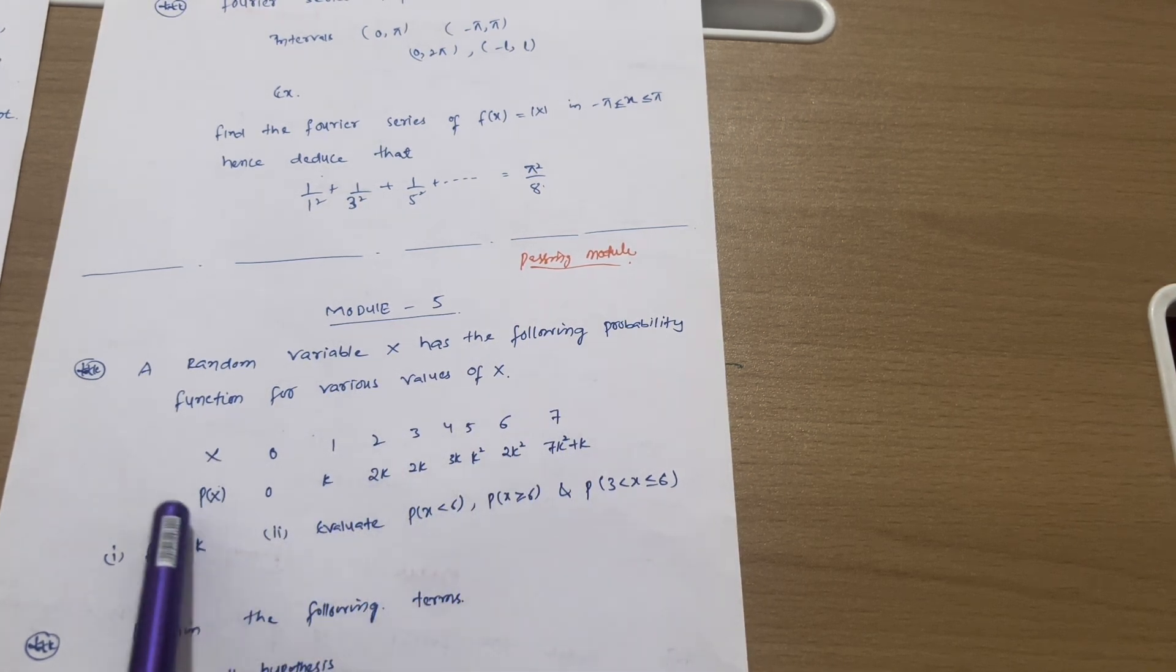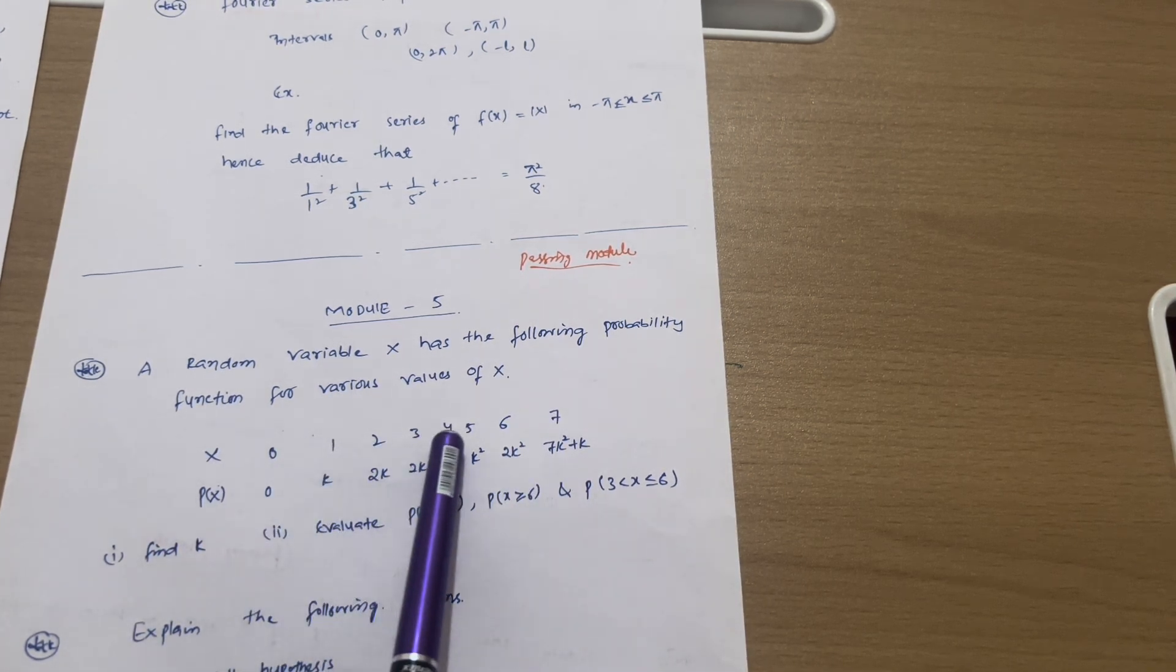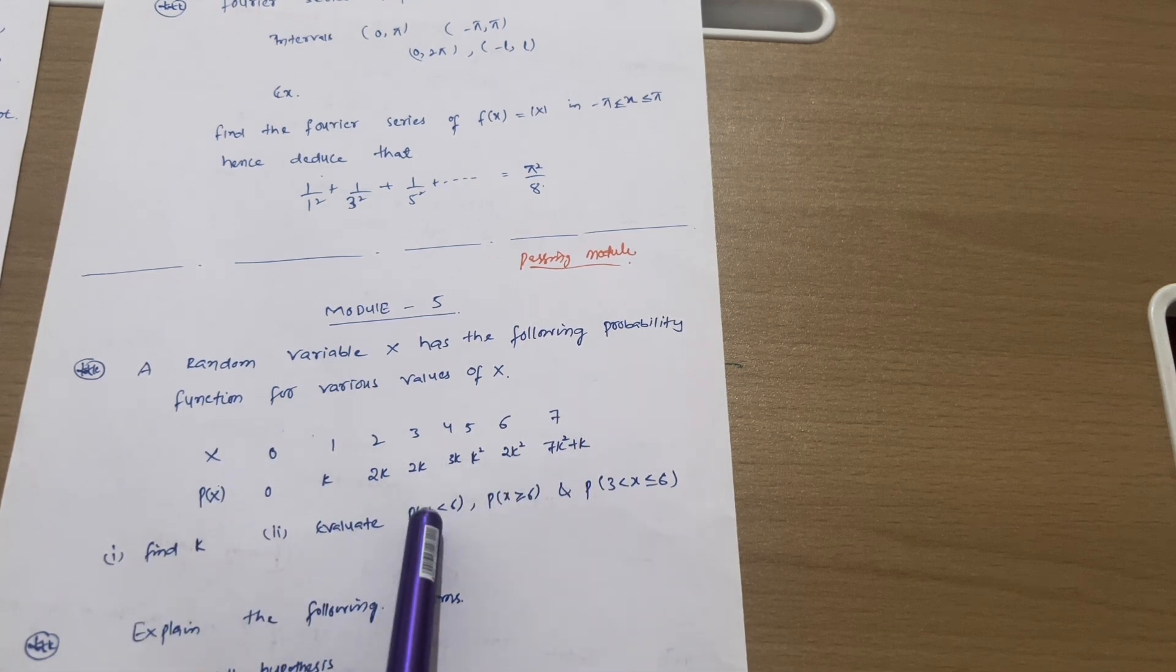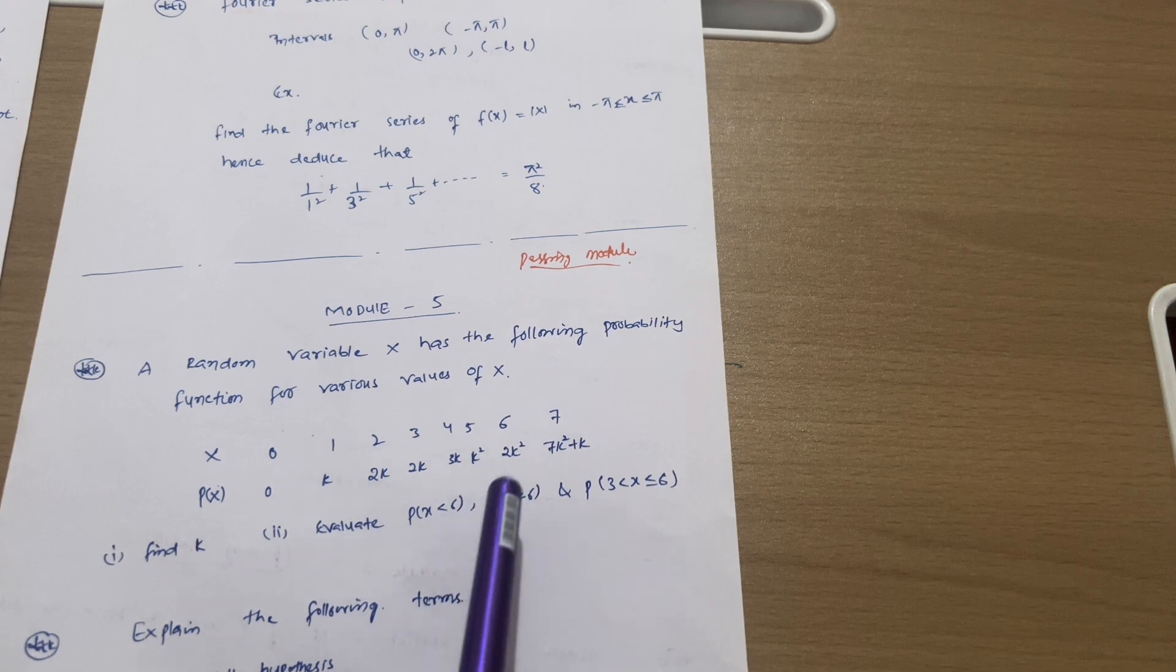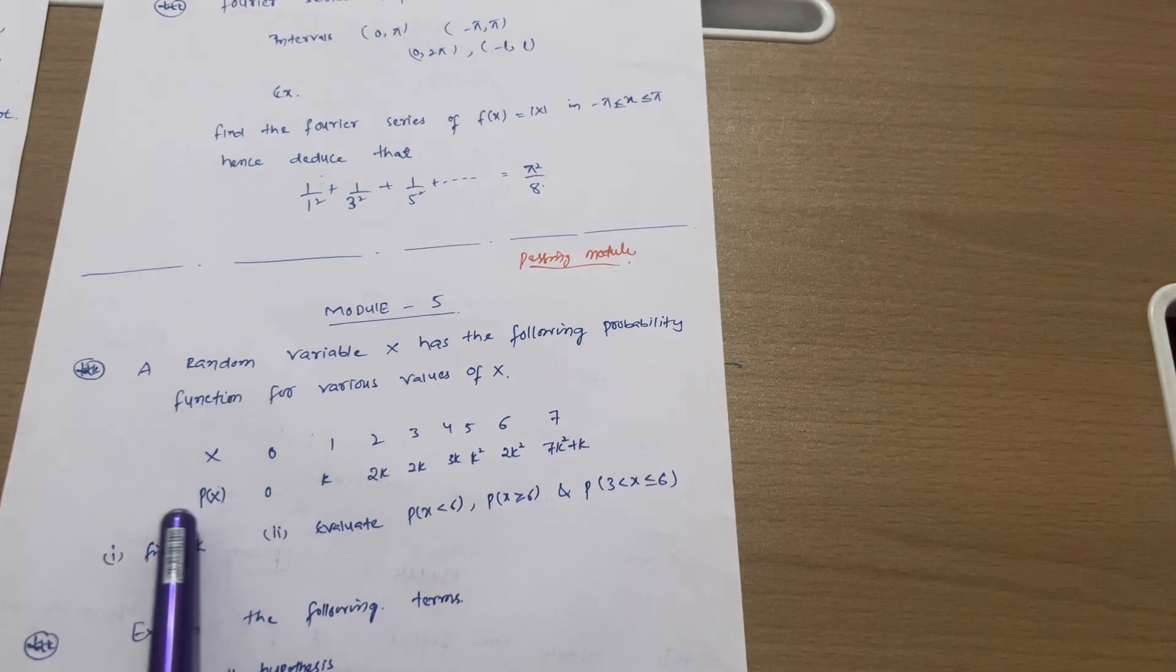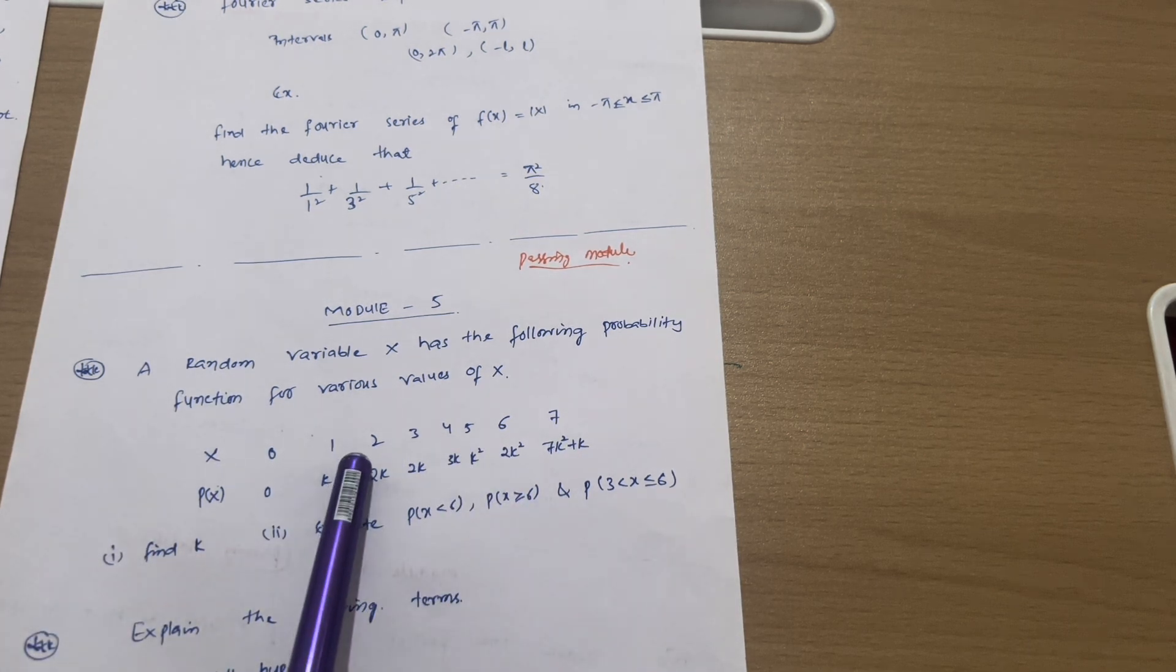A random variable x has the following probability function for various values of x. This is the question which I have taken as an example: 0, 1, 2, 3, 4, 5, 6 and probabilities are respectively given. What we have to find: find k and evaluate p(x < 6), p(x ≥ 6) and p(3 < x ≤ 6). So this is the seven marks question which is very easier one. I have solved particularly this question also you can go through.